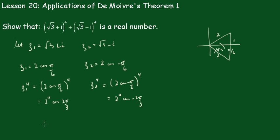Okay, so when you add those two together, z1⁴ plus z2⁴, 2⁴ is a common factor.